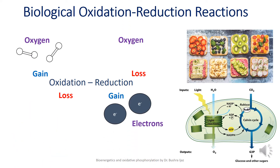Biological oxidation-reduction reactions: the transfer of phosphoryl groups is a central feature of metabolism, but equally important is another kind of transfer — electron transfer in oxidation-reduction reactions. To quickly revise: oxidation in simple terms is the gain of oxygen while reduction is the loss of oxygen. In terms of movement of electrons, oxidation is the loss of electrons and reduction is the gain of electrons.